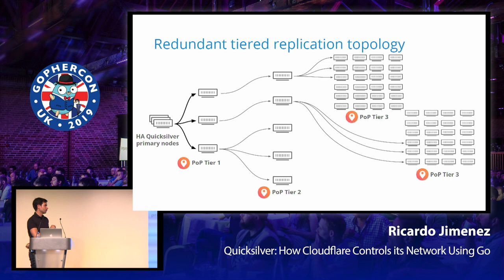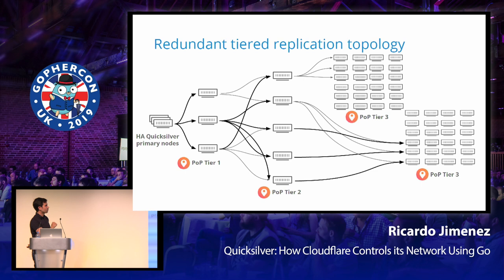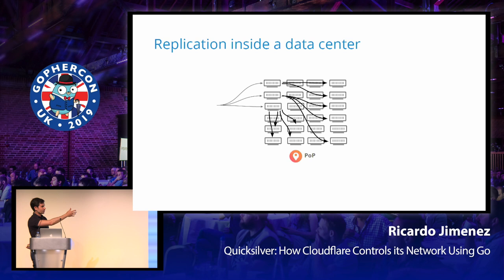If one primary node fails it's very easy to replace without interrupting the replication stream or causing inconsistencies. Because of how we chain together log entries, a node can flip to start following a different upstream node and will observe the same sequence of log entries, guaranteeing the same state. Within a data center, we only choose a subset of servers to receive the replication stream from outside, and then replicate internally to the rest — so we never overload any server that is already busy running other software.